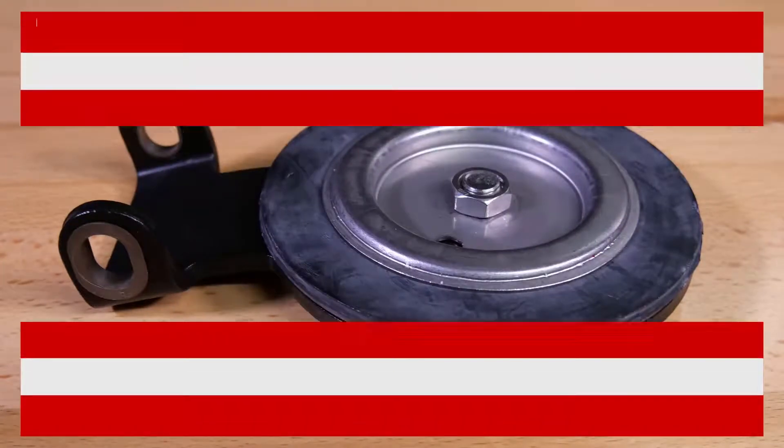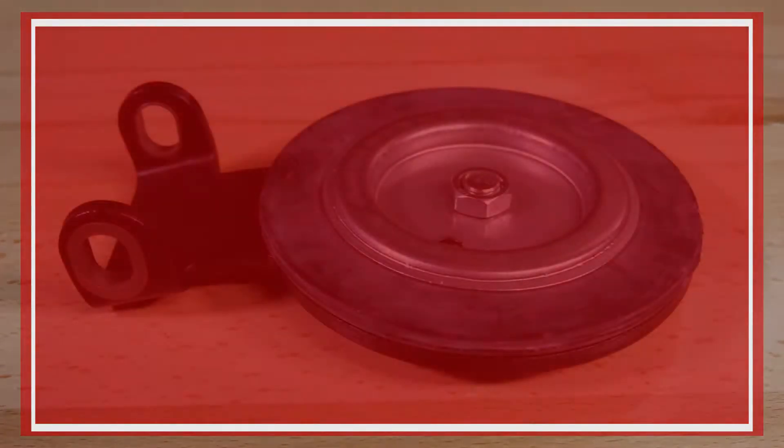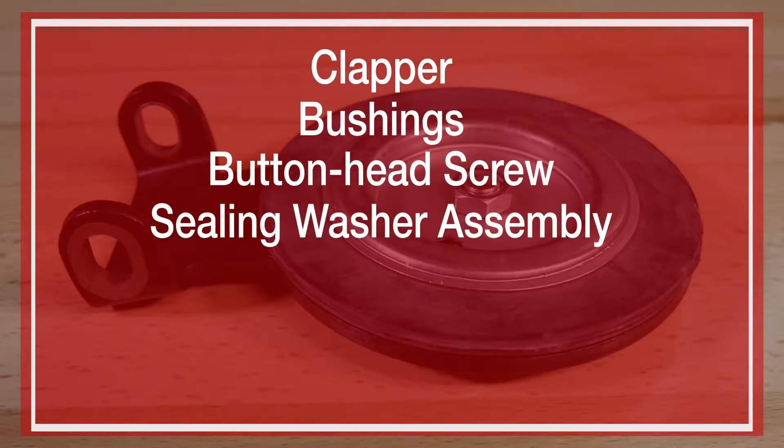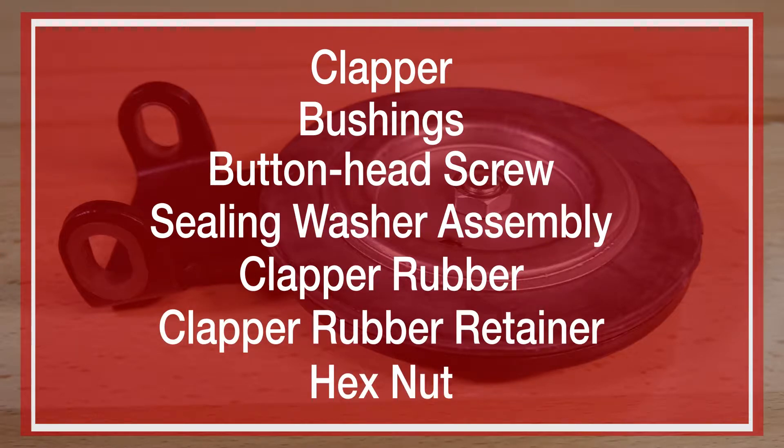We will be covering the replacement of the clapper assembly which consists of the clapper, the bushings, the button head screw, sealing washer assembly, clapper rubber, clapper rubber retainer, and the hex nut.